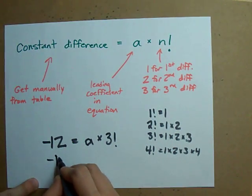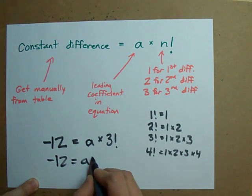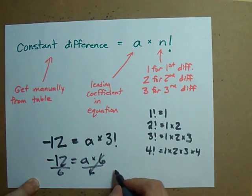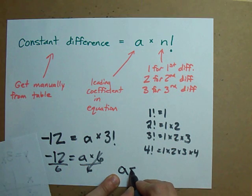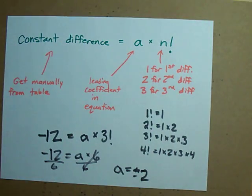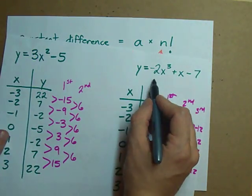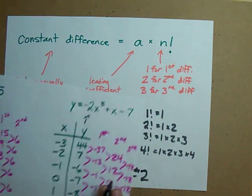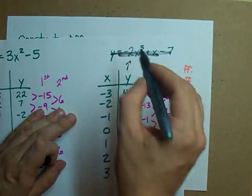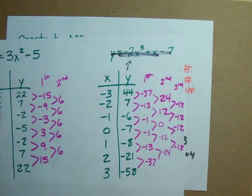Now I know that 3 factorial is 6, and so I can divide both sides by 6 and my leading coefficient turns out to be negative 2. Can I write that properly? Negative 2. Oh look, it was! And you'll be able to determine what the leading coefficient is whether you're given that first equation or not. Best of luck.